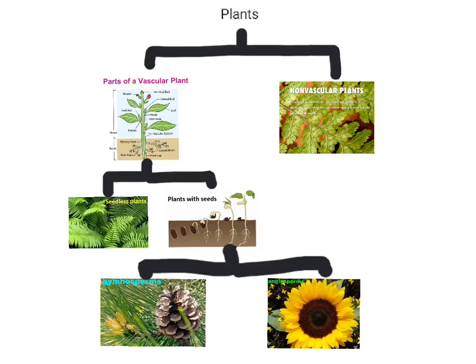Just so we understand plant classification, we'll go through it one more time. The first thing we ask ourselves is: does the plant contain vascular tissues for transporting water and nutrients? If it does, then we ask: does it reproduce using a seed or not? If it does reproduce using a seed, we then ask: does it produce a flower and seeds from an enclosed fruit? If it does, it's considered an angiosperm. If it does not, and it produces seeds on the scales of cones, then it would be considered a gymnosperm.